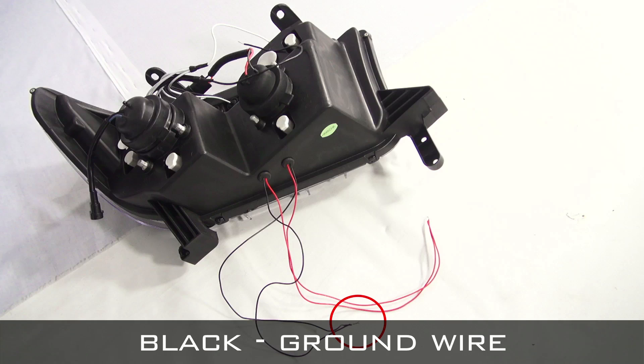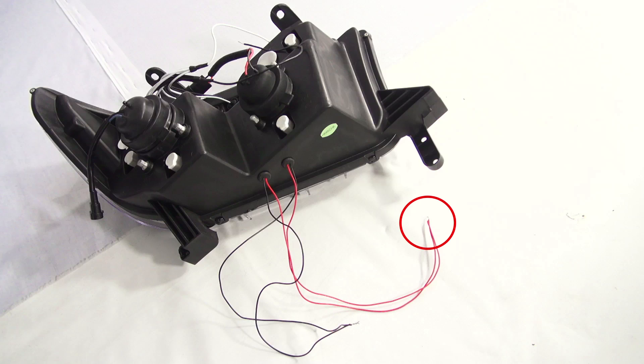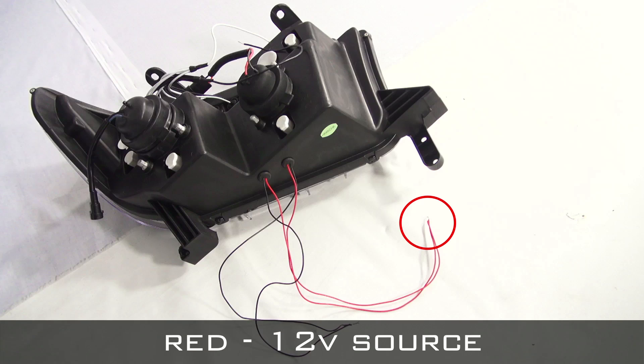Black is ground and can be tied into the LED accessory ground wire. The red 12 volt source wire can be tied into the parking light 12 volt source wire.